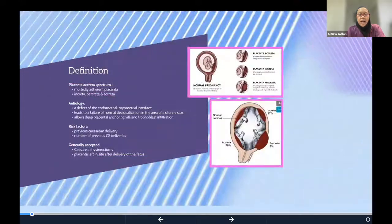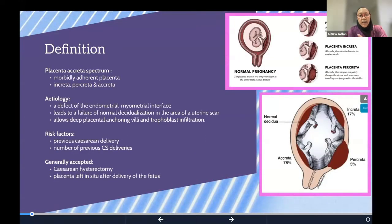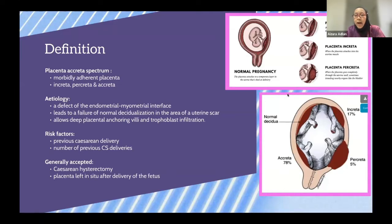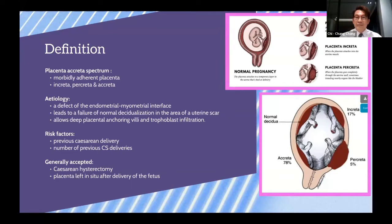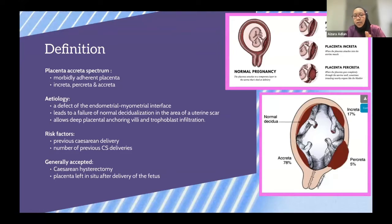Let me take you back through the definition. What was previously known as a morbidly adherent placenta is now known as the placenta accreta spectrum. This includes the increta, where the placenta is attached to the myometrium, and the accreta, where it attaches to the uterus. If it enters deeper into the uterine muscle it becomes an increta, and when it penetrates completely through the myometrium — sometimes into the bladder — we call it a percreta.